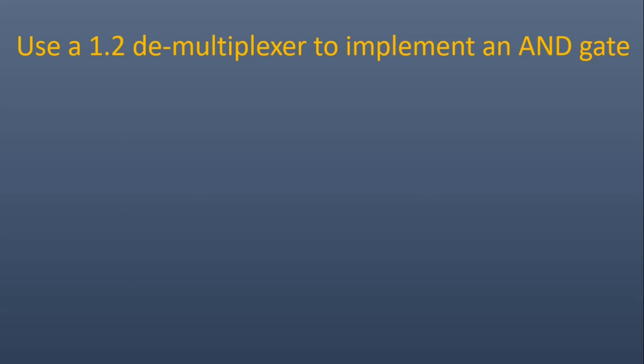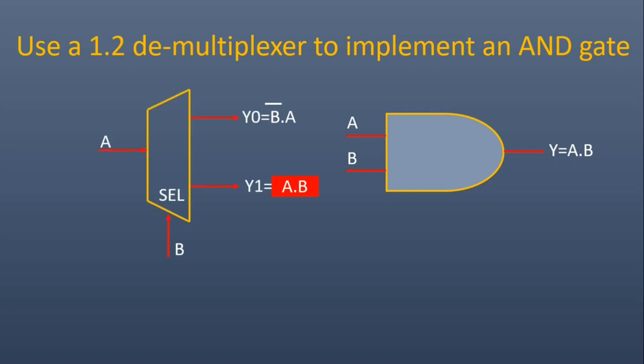You have to use a 1-to-2 demultiplexer to implement an AND gate. Those who know the answer, please write it down in the comment section. Otherwise, I am going to tell you the answer. This is a gate where A and B are two inputs and Y is the output, which is equal to A AND B.